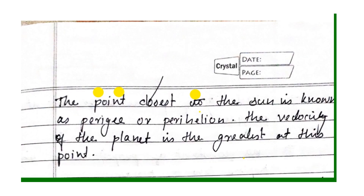The point closest to the Sun is known as perigee or perilone, and the velocity of the planet is greatest at this point.